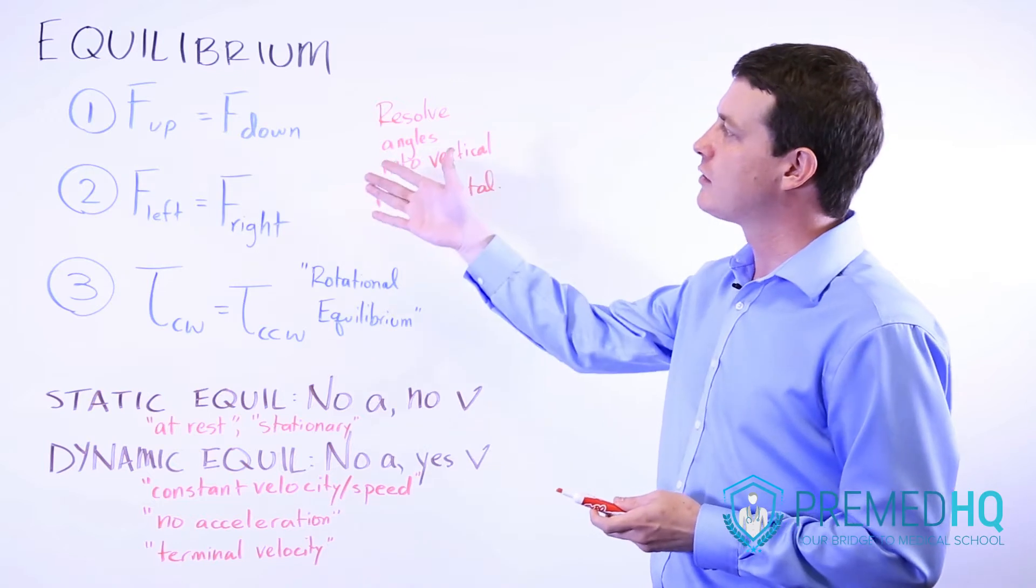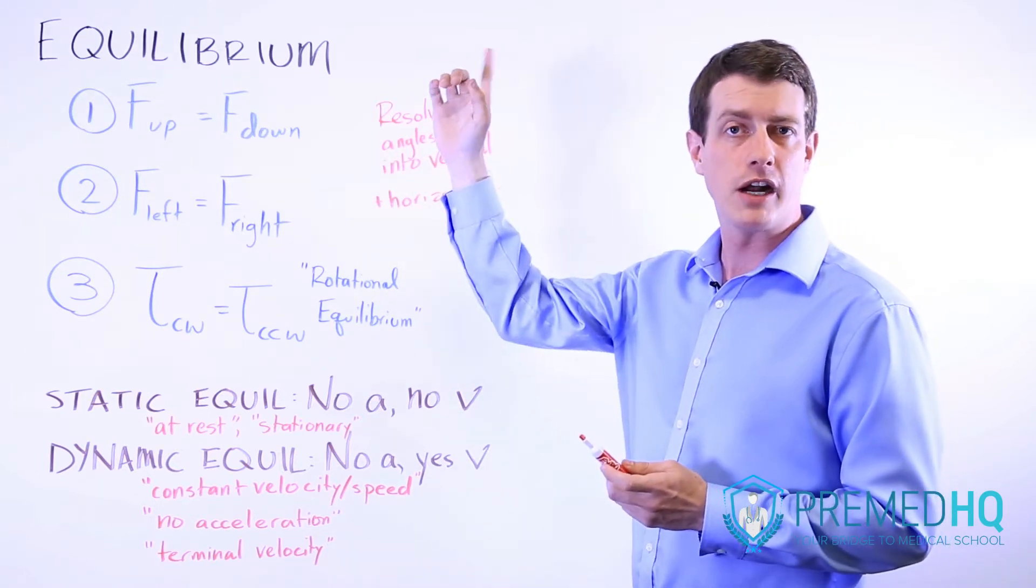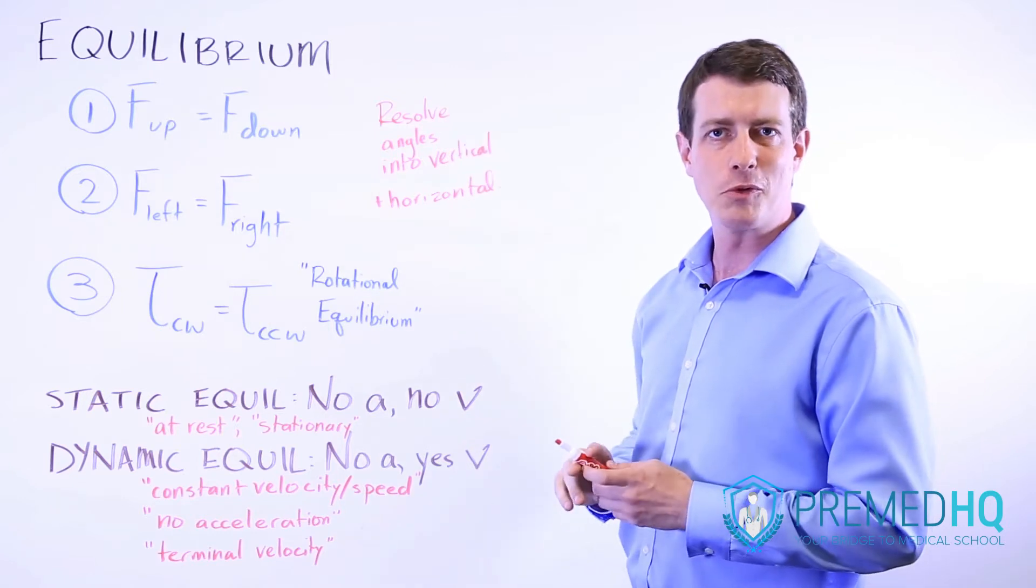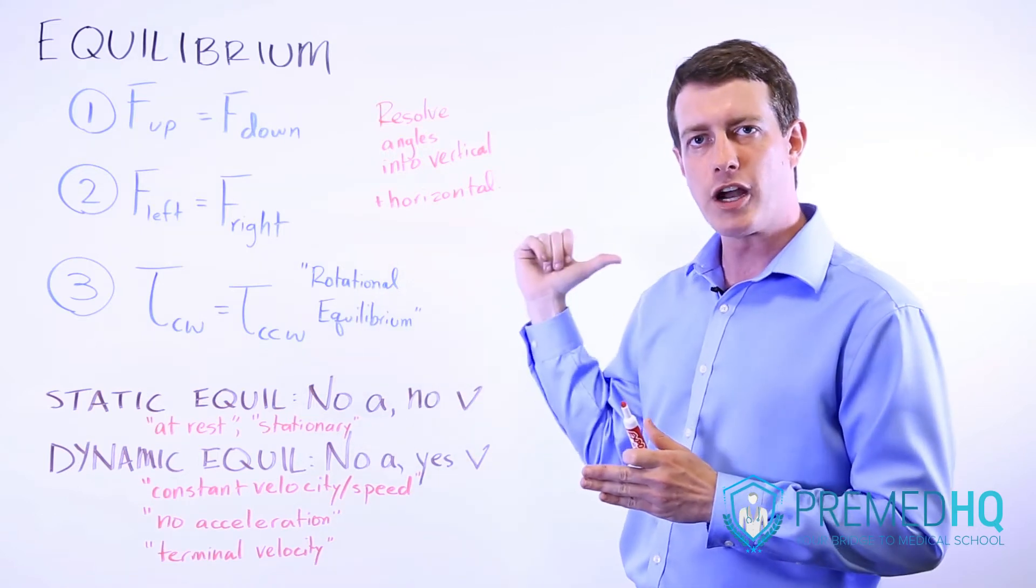So one of the conditions of equilibrium is that the vertical forces balance out. The forces in the upward direction equal the forces in the downward direction. Similarly, the forces in the left direction equal the forces moving right.